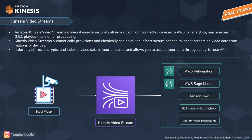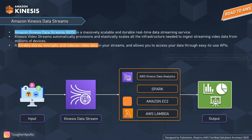SageMaker provides a platform to execute machine learning algorithms, while TensorFlow offers a full ML platform. HLS, or HTTP Live Streaming, is also a key output — YouTube uses Apple's HLS to provide its live streaming services. For exam purposes: if you see a question about real-time video stream processing, think Kinesis Video Streams.